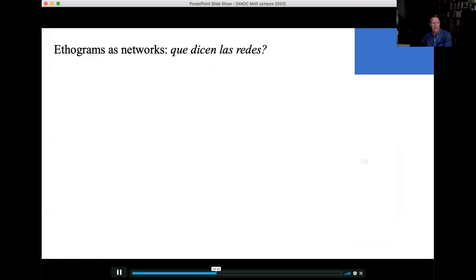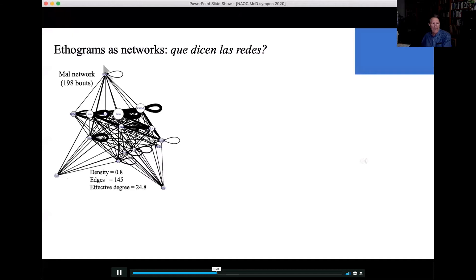I'm going to start with networks from ethograms. So an ethogram has behaviors, transitions between behaviors, from bow to head-down bow to ALAD to something else. So these nodes in the network are the discrete behavioral elements, and the directed arrows are the transitions between them. The male network composite from 198 bouts was very dense. 80% of the edges that could occur did occur. That's 145 edges. And then effective degree, an obscure metric from some guy named McDonald, the edge weights, the effective degree goes way down when there's high variance in the edge weight. So instead of 145 for the effective degree, we get 25.